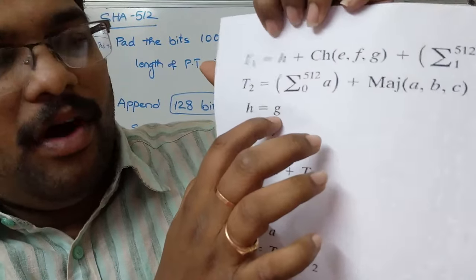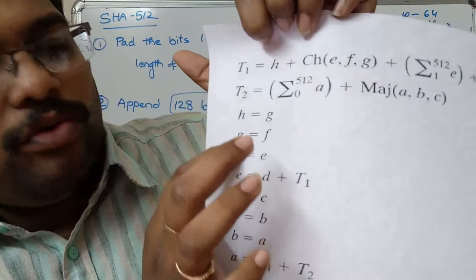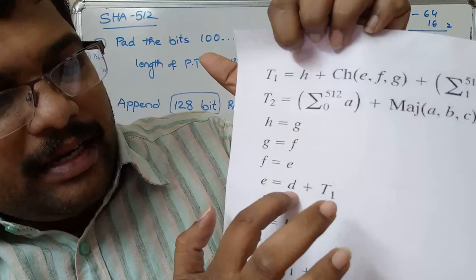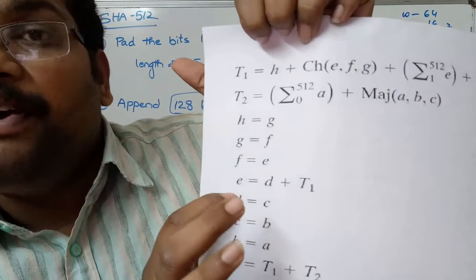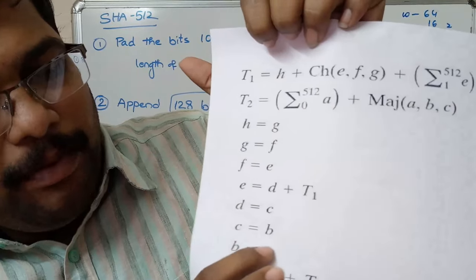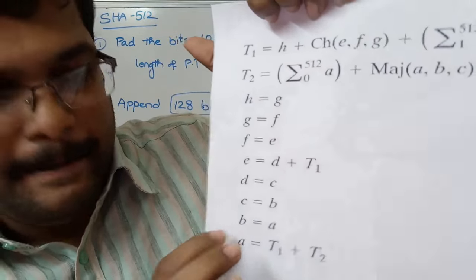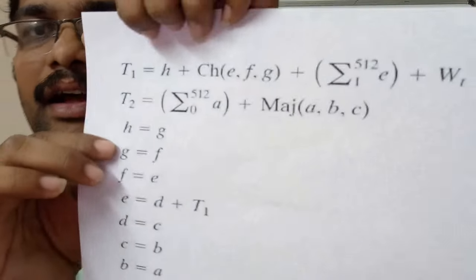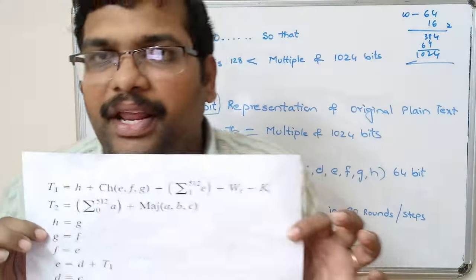The buffer updates per round are: H ← G, G ← F, F ← E, E ← D + T1, D ← C, C ← B, B ← A, and A ← T1 + T2. This formula is implemented in each and every round.